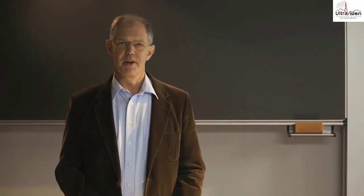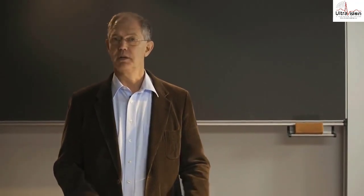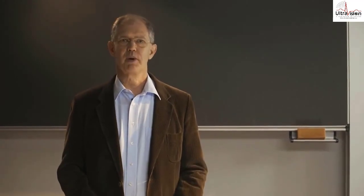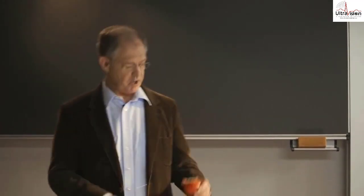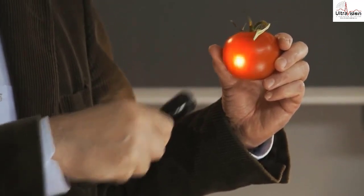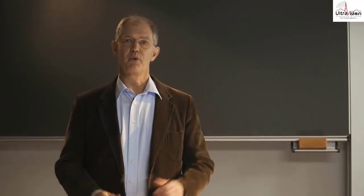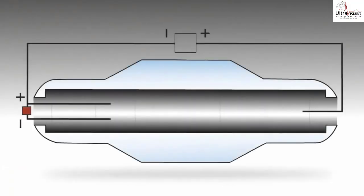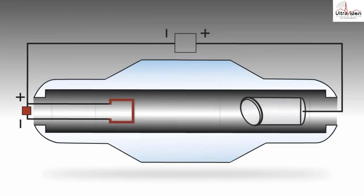So where do x-rays come from? Well, it's really very simple. If you want to make red light, all you need to do is shine white light against a red object, and the light reflected back is now red. Producing x-rays is nearly as simple: instead of using light, you shine a beam of electrons against a certain kind of metal — for example, tungsten. What gets reflected back is neither light nor electrons, but a beam of x-rays.